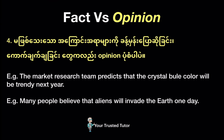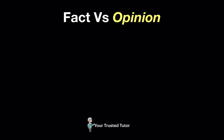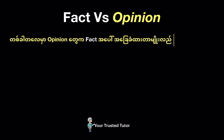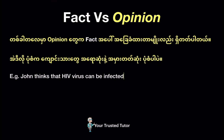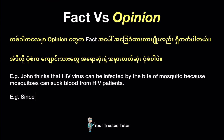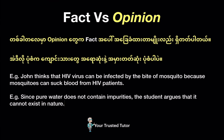After learning all these tips and tricks, I hope you can now master the differences between facts and opinions. Before we end this video, I want to explain one more important thing. This is important for all students because it is the most commonly tested part of the GED exam. Sometimes, opinions can also be expressed based on facts — this form of question is the trickiest for students and most students answer them incorrectly. For example: 'John thinks that HIV virus can be infected by the bite of a mosquito because mosquitoes can suck blood from HIV patients' — this is just John's personal opinion. 'Since pure water does not contain impurities, the student argues that it cannot exist in nature' — this is also just the student's personal opinion about pure water, even though it states a fact.